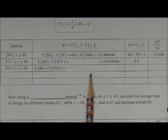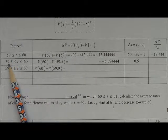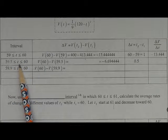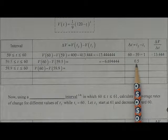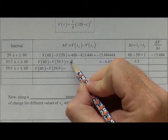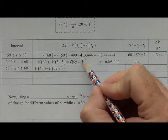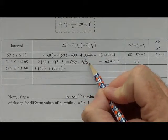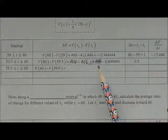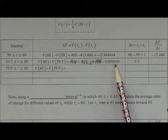Okay, so now if we then bring that value of T1 from 59 to 59.5, we'll bring it a little bit closer to 60, thus making that interval shorter. The time interval is now .5 seconds. And V of 60, again, is still 400, and V of 59.5 is 406.69 and four fours, can't squeeze it in there very well, which gives us negative 6.694444.